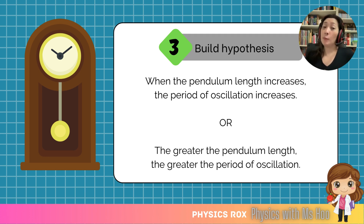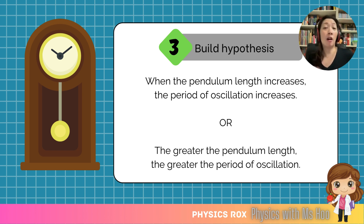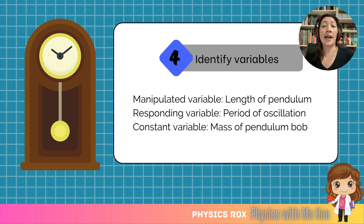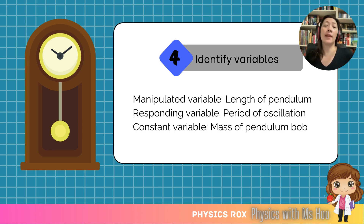When writing the hypothesis, make sure you show the cause and effect — that means you show how the change in the manipulated variable changes the responding variable. In physics, the order in which you write these variables is important. Both methods shown in this slide are acceptable. Now we need to identify the variables. There are three variables in general: the manipulated variable, also known as the independent variable; the responding variable, also known as the dependent variable; and the constant variable, also known as the controlled variable.